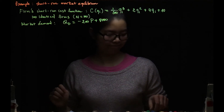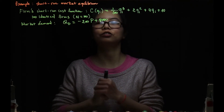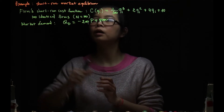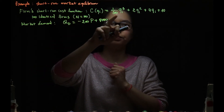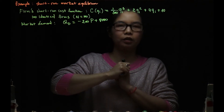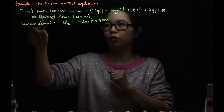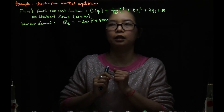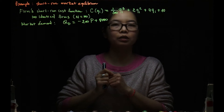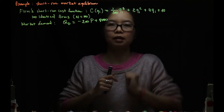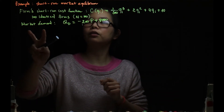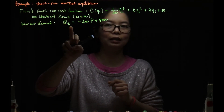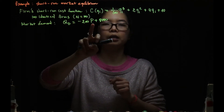Let's do an example about finding short-run market equilibrium. I've written down the necessary assumptions. We have the short-run cost function C(qi) for individual firms. Here we assume each firm has the same short-run cost function, and we have a total of 100 firms. The second thing is we have a market demand function Qd as a function of market price P.